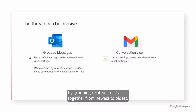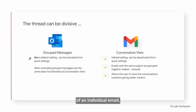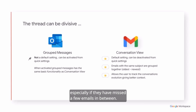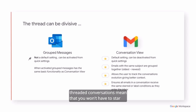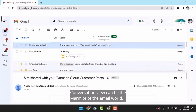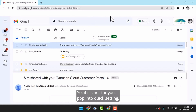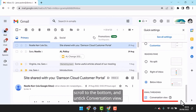Conversation View gives perspective by grouping related emails together from newest to oldest. The reader can then understand the context of an individual email, especially if they have missed a few emails in between. If you like an organised inbox, threaded conversations mean that you won't have to star or label each email as it arrives to keep a record of the conversation. Conversation View can be the marmite of the email world, so if it's not for you, pop into Quick Settings, scroll to the bottom and untick Conversation View.